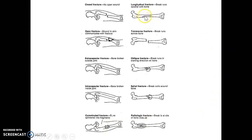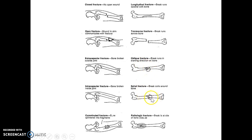Longitudinal means the fracture crack goes down the bone, where transverse just goes across. Oblique is at an angle. Spiral is a twisting fracture, like the stripe on a candy cane.